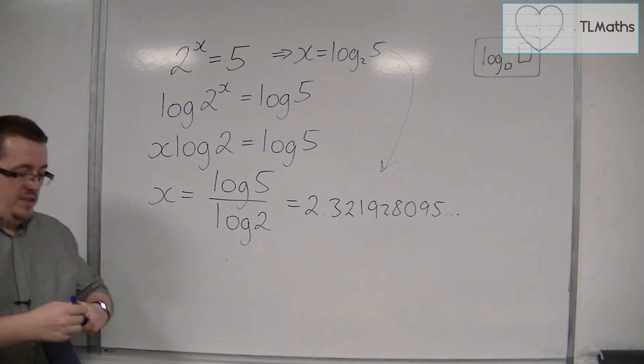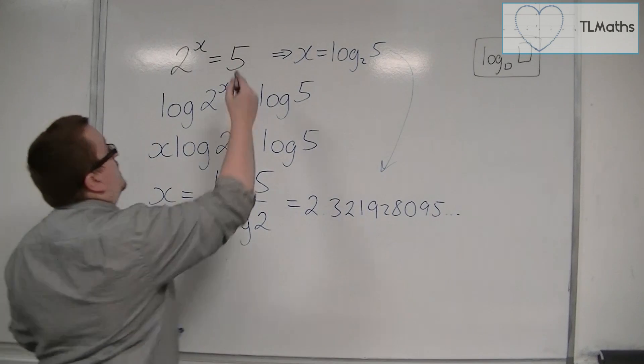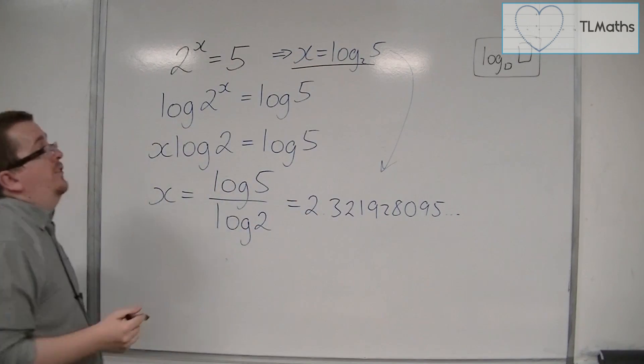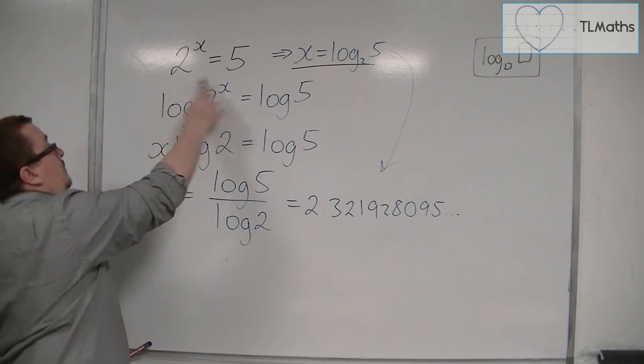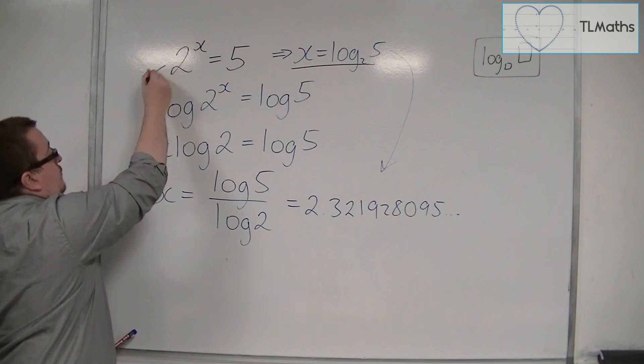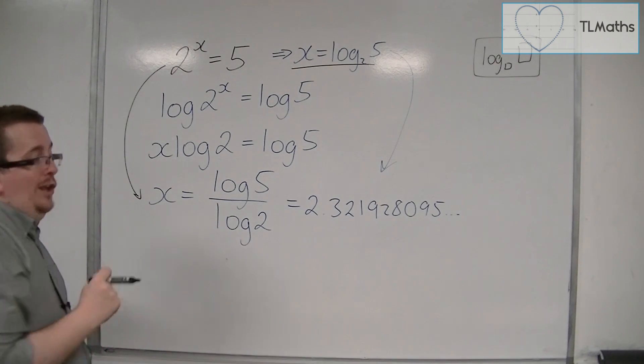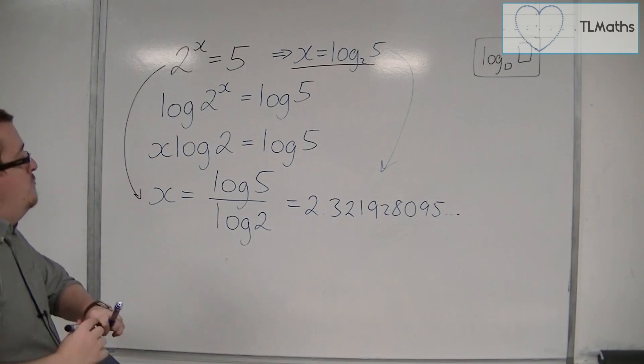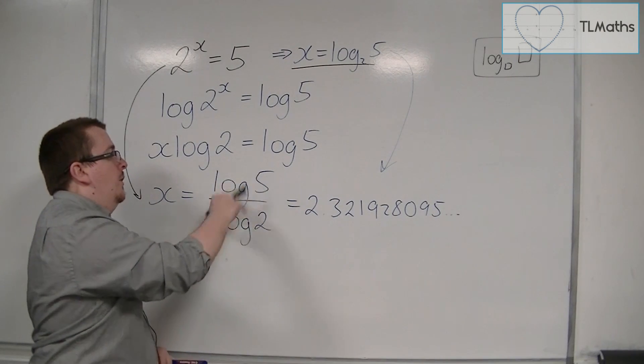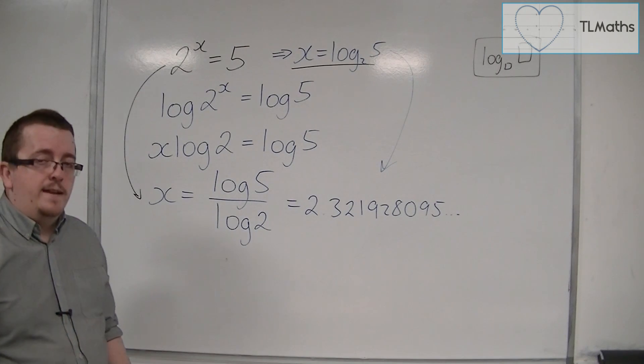So you have two options here. You can either go straight into writing x equals log base 2 of 5, go straight from exponential form to logarithmic form, or you can go through the process of logging both sides and rearranging to get an expression on the right-hand side in terms of log base 10.